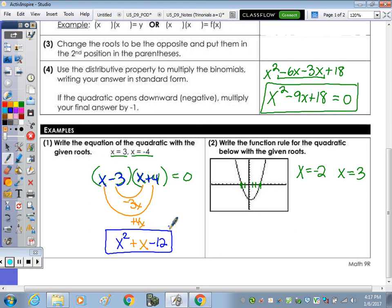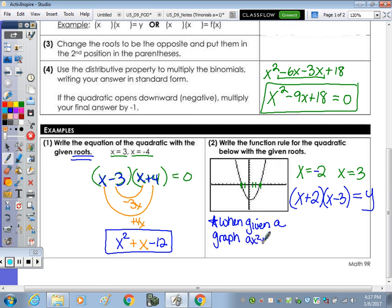We'll do the same thing over here. So if the root is x equals negative 2, the factor is going to be the opposite and be positive. If this is x equals positive 3, the factor is going to be x minus 3. When we actually pull it from the graph, and we're not told it has roots, the picture is actually set equal to y. So if you want to make a note, when given a graph, ax squared plus bx plus c is equal to y.